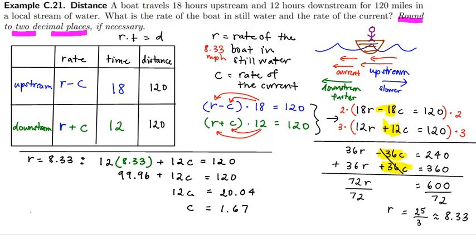And therefore we could say that the rate of the boat in still water is 8.33 miles per hour, and the rate of the current is 1.67 miles per hour.